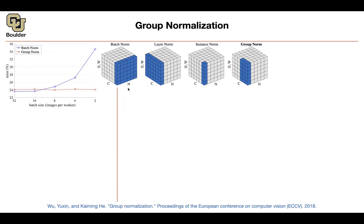Some of you are using batch sizes of one and not running into trouble, because there is still a height and width dimension you are computing your statistics over. Otherwise, the variance of a single batch with no height and width would be zero, and you'd be dividing by zero in your batch normalization. So yes, you can have a batch size of one for images if you have the height and width dimension. That's batch normalization.